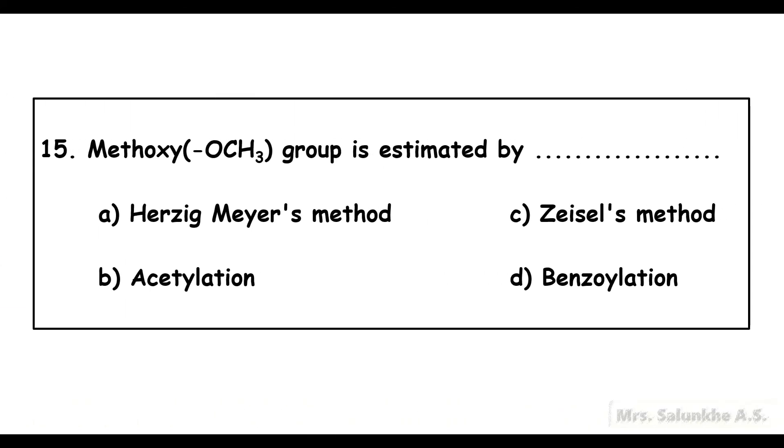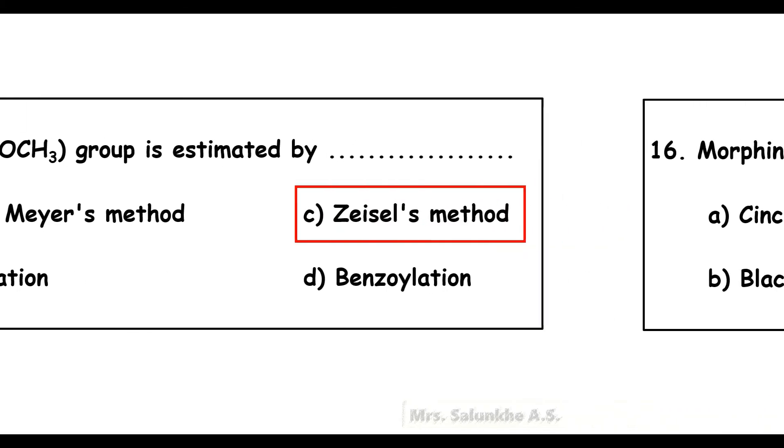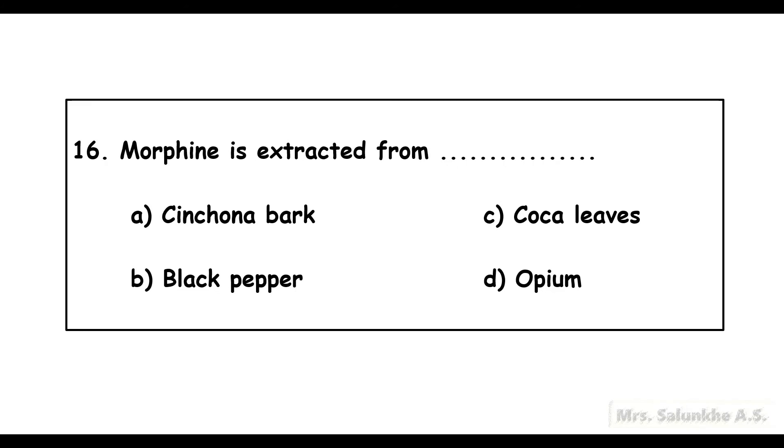Methoxy group is estimated by Zeisel method. Morphine is extracted from opium.